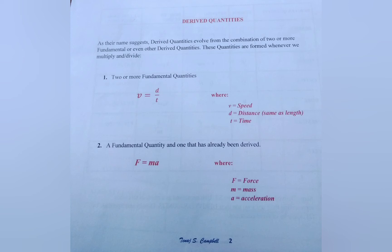Looking at the first example to show how derived quantities are formed from two fundamental quantities we see that speed is equal to distance over time. Distance and time are fundamental quantities. Distance is just another name for length. Distance is divided by time to give you speed. Speed is a derived quantity that came from the combination of two fundamental quantities.